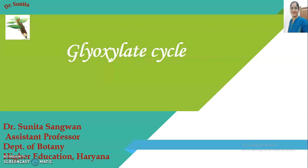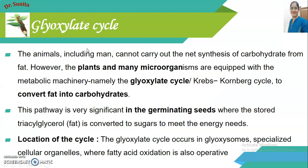Hello everyone. The topic of today's lecture is the Glyoxylate cycle. This is a cycle for conversion of fatty acids into carbohydrates. In animals, whether man or other animals, this does not carry out net synthesis of carbohydrates from fats. But plants and many microorganisms are equipped with the metabolic machinery named the Glyoxylate cycle, also named the Krebs-Kornberg cycle, which can convert fats into carbohydrates.